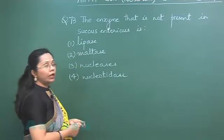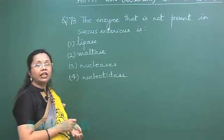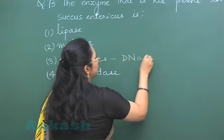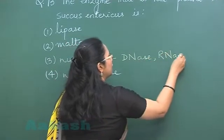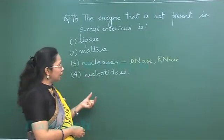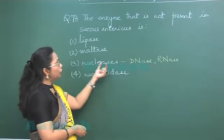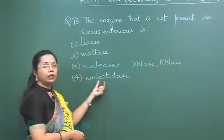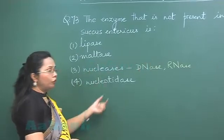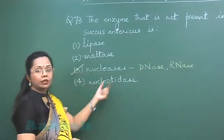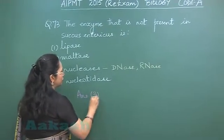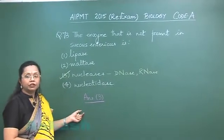Nucleases are enzymes that act on DNA and RNA — they are of two types: DNase and RNase. This enzyme is present in pancreatic juice, not in succus entericus. The broken-down products of DNA and RNA are then acted upon by nucleotidase, which is present in succus entericus. So the odd one out is nuclease, as it is found in pancreatic juice. Our answer is option three.